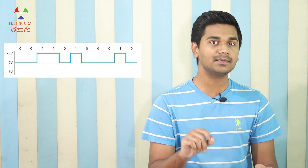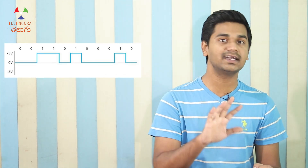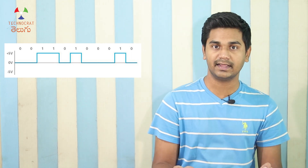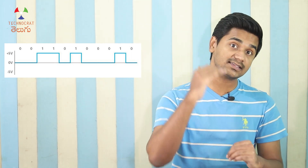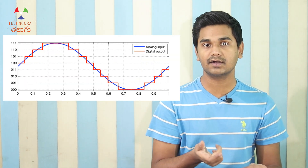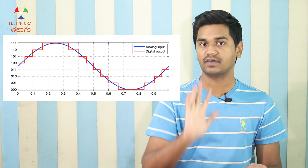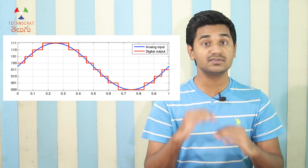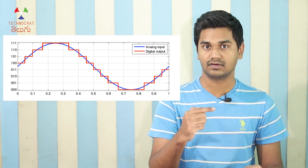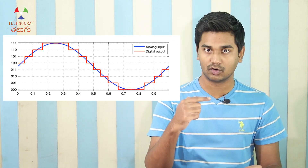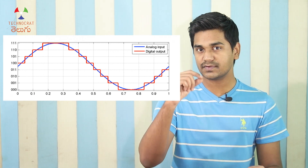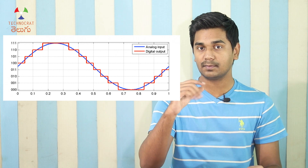Now we have digital data. We have to break the voltage variation into discrete steps. We break 0 to 5V into 50 levels — 0.1V, 0.2V, 0.3V — and so on. We break the voltage variation into steps.